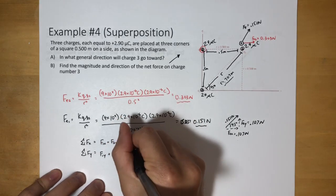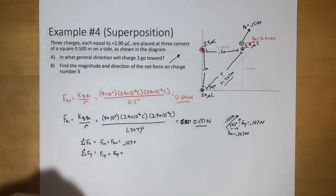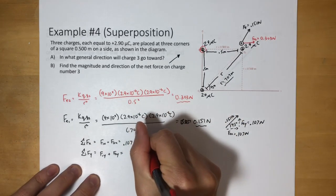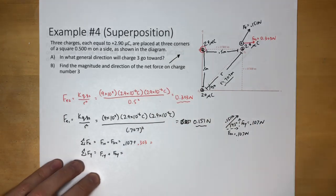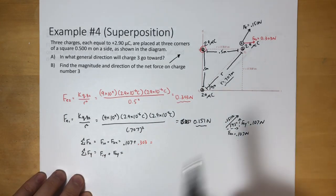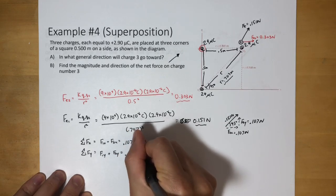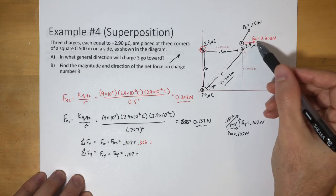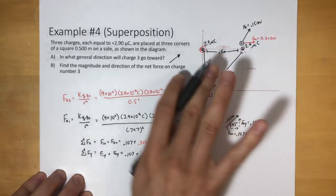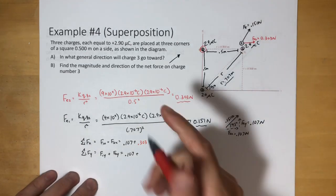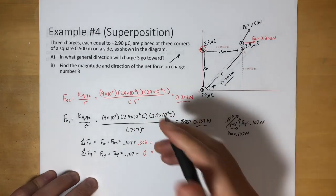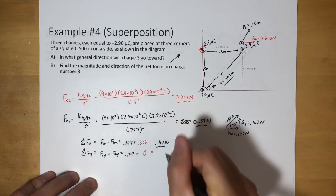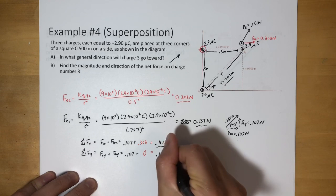F1_x = 0.107 newtons, plus F2_x = 0.303 newtons (in red), giving a total x-component of 0.41 newtons. F1_y = 0.107 newtons, and F2_y = zero because charge two pushes only in the x direction. So the total y-component is 0.107 newtons.